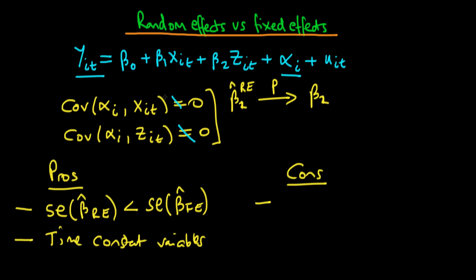And if it is actually the case that these two covariances aren't equal to zero then the major con of random effects is that it is inconsistent. So whereas fixed effects is always consistent independent of whether this covariance is equal to zero or not, random effects hinges on these assumptions being true.